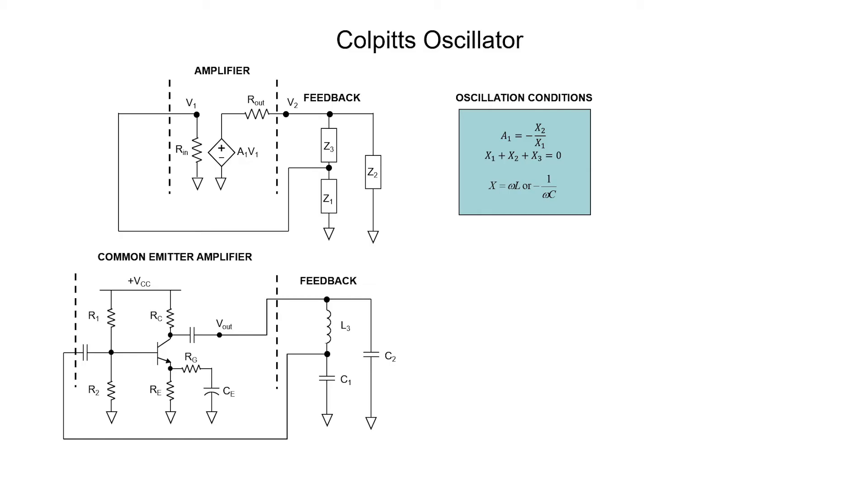For an inverting amplifier, we can use a standard common emitter transistor configuration. Let's translate these oscillation conditions to this particular circuit. Our first reactive element is a capacitor. Our second reactive element is also a capacitor. Our third reactive element is an inductor.